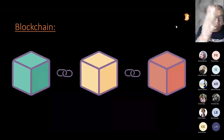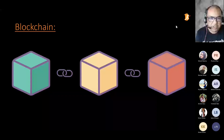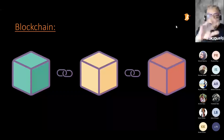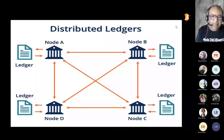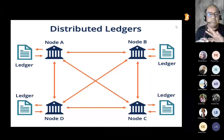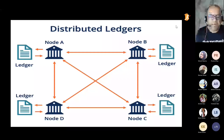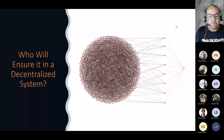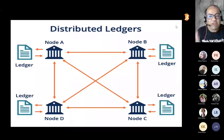Every block is connected to each other in a chronological manner — number one, number two, number three, and so on. The beauty is that the copy of the ledger is available with all the participants, that is, nodes in the network. Every node is connected to each other and every node has a copy of the ledger.